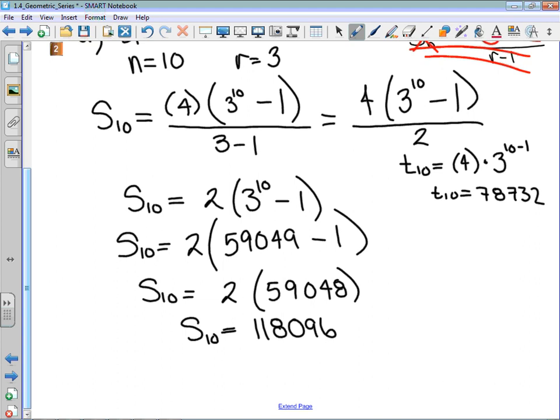If you take that number and divide it by 3, you get the term before it. So term 9 is 26,244. So it does make sense that we have a sum in the 100,000s.